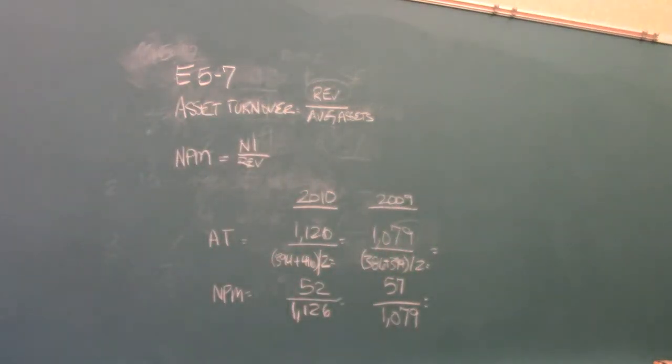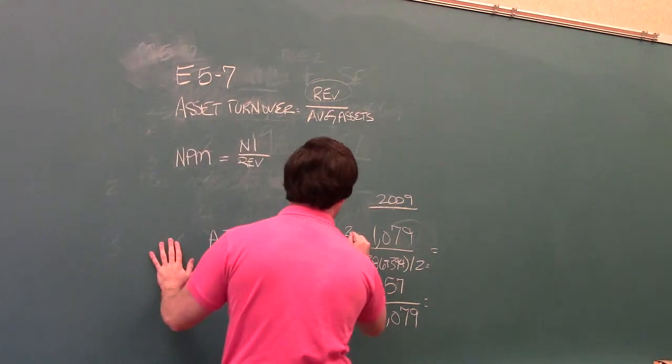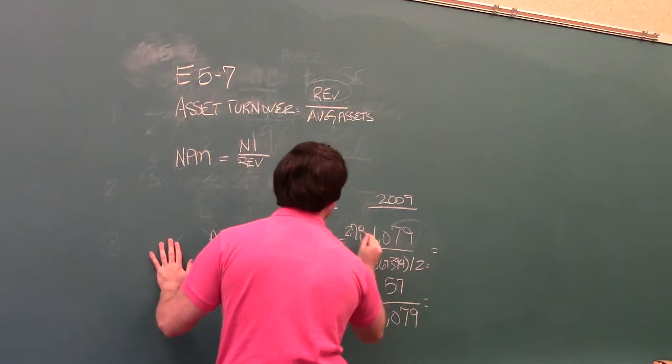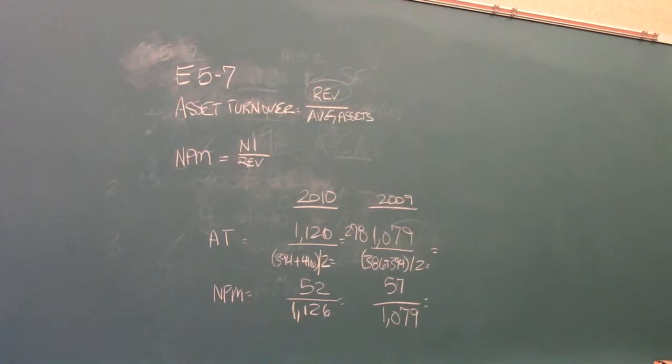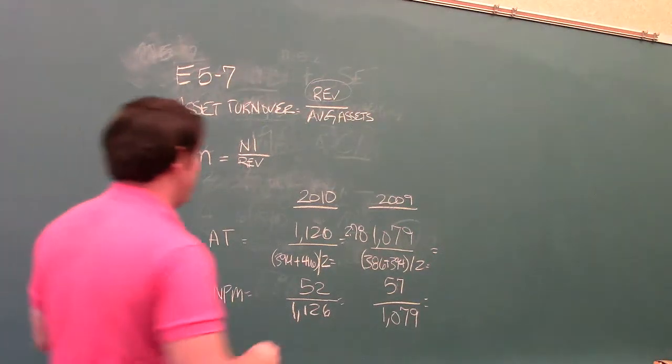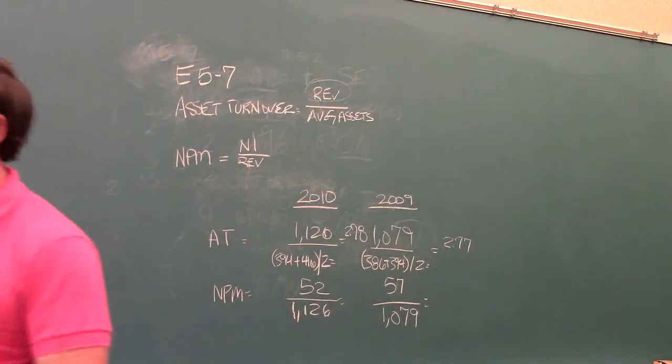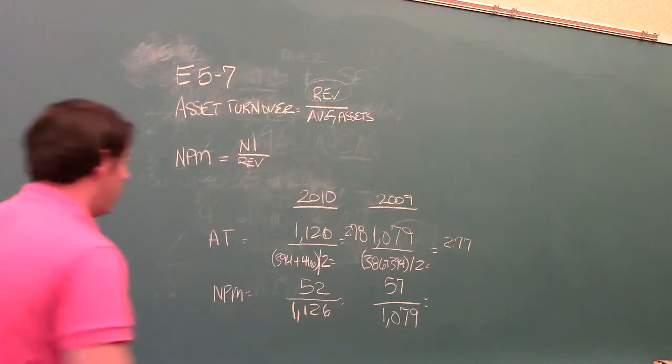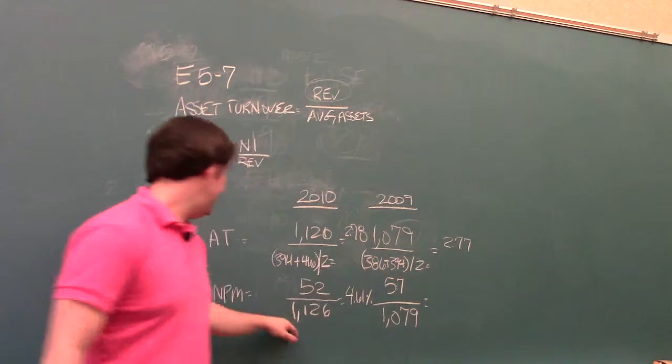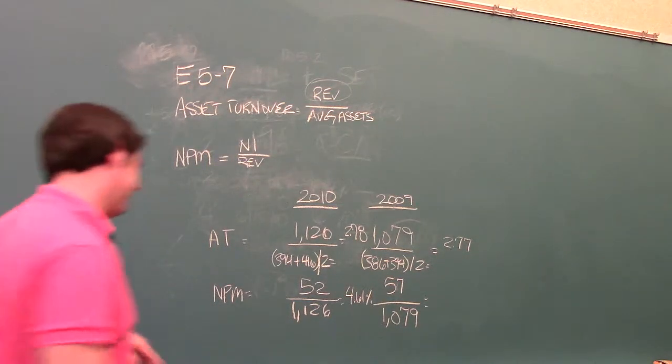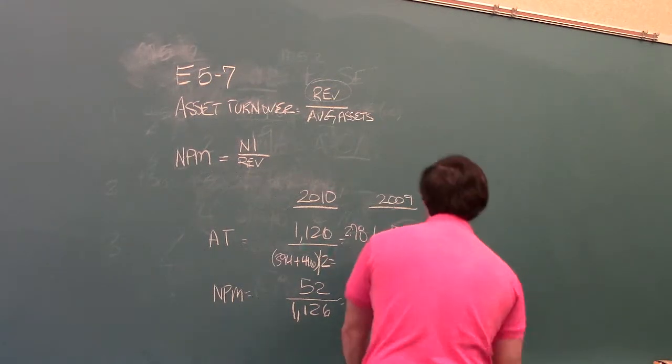For 2010, we get 2.78. I'm going to write this right here. 2.78. Hopefully you can see that here. It's 2.78 for the asset turnover. And 2.77 for 2009. For the net profit margin, we get 4.61% for 2010. And 5.28 for 2009.